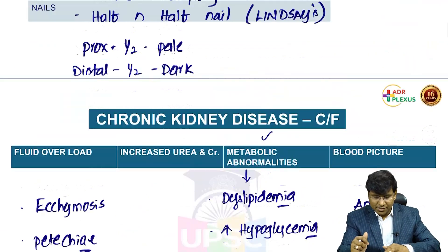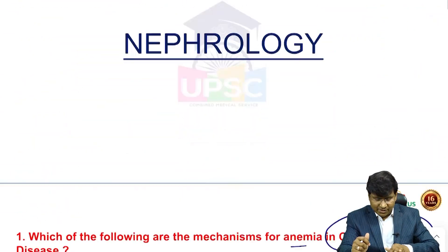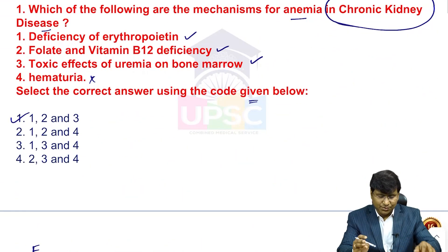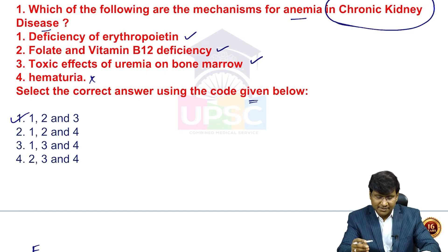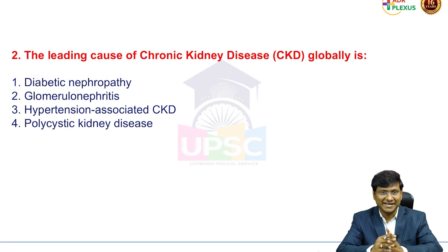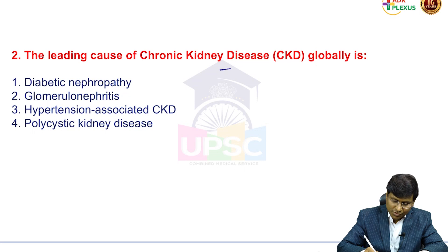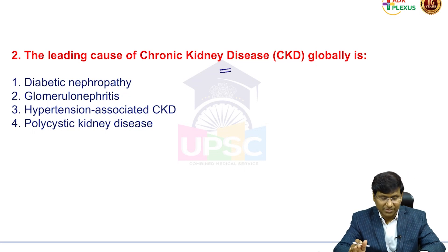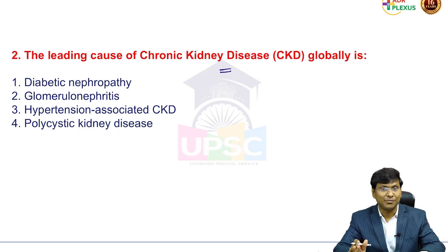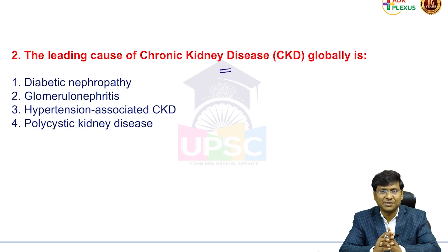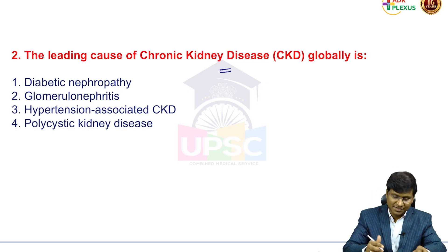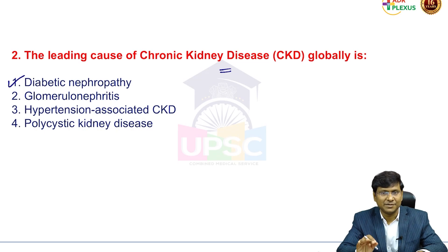The correct answer for the first question: the cause of anemia is erythropoietin deficiency, B12 and folate deficiency, and toxic effects of urea on the bone marrow. Now the second question: what is the leading cause of chronic kidney disease globally? The options are diabetic nephropathy, glomerulonephritis, hypertension-associated CKD, and polycystic CKD.